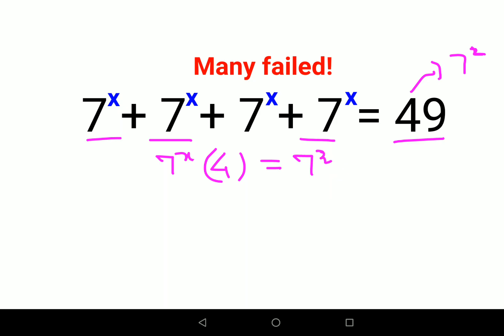Next, we'll divide both sides by 4, so this comes out to be 7^x = 7²/4. Instead of 4, we'll write it as 2², so this looks like 7^x = (7/2)². But after this, we get stuck.